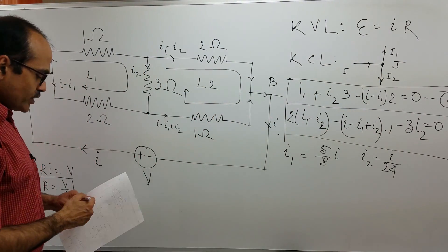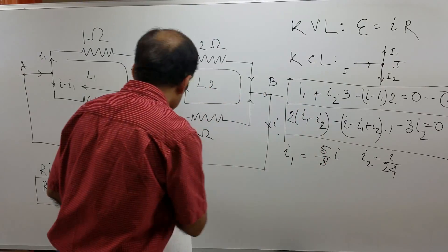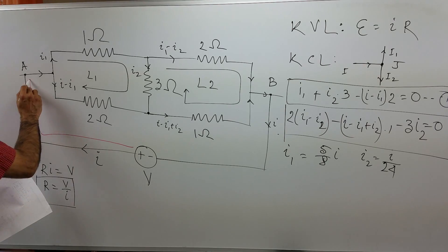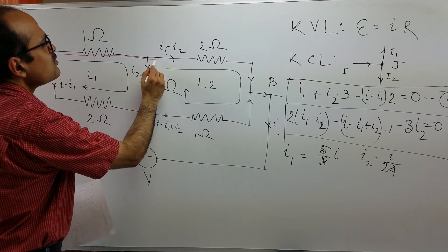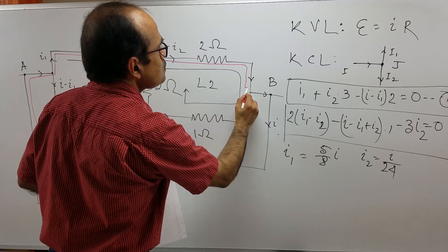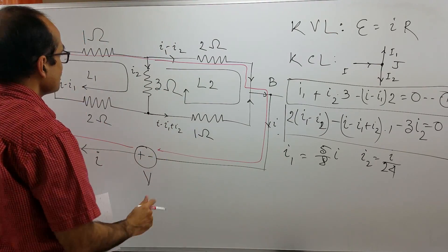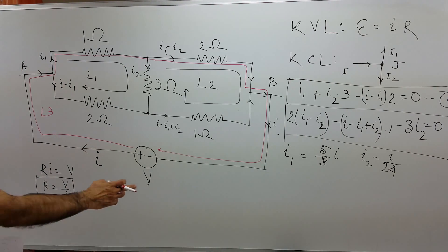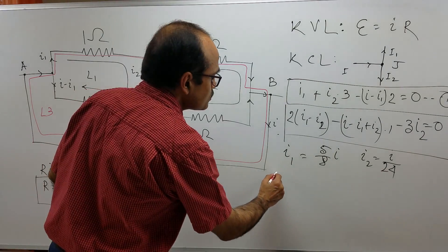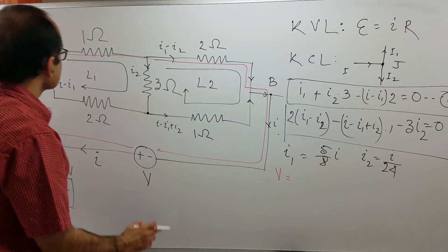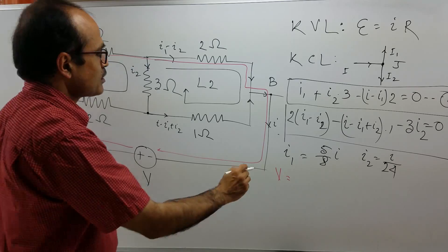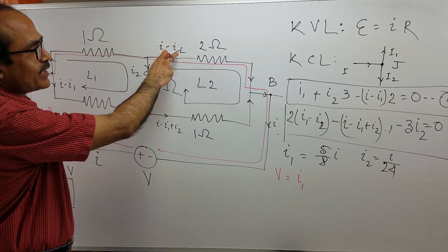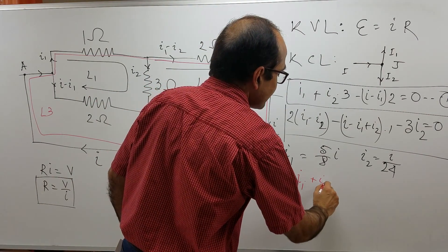Now, we choose a different loop now which includes the voltage source. If we choose this loop, this is loop number 3. If we choose this loop, EMF supplied is V. So V is equal to here the drop is I1 times 1. So it is just I1 and then here the drop is I1 minus I2 times 2, plus I1 minus I2 times 2 and there is no other resistor.